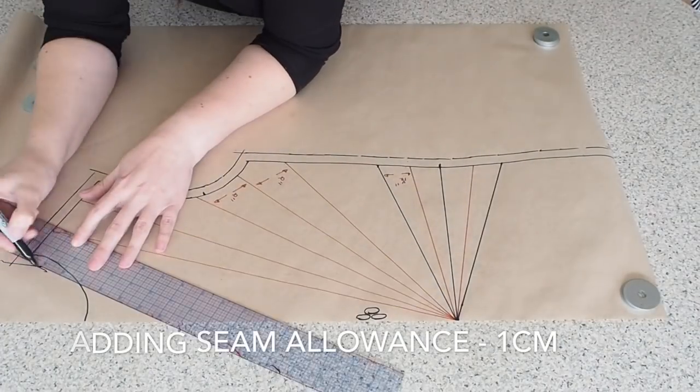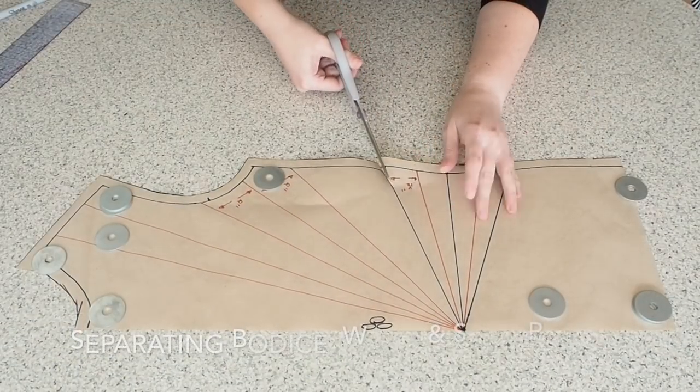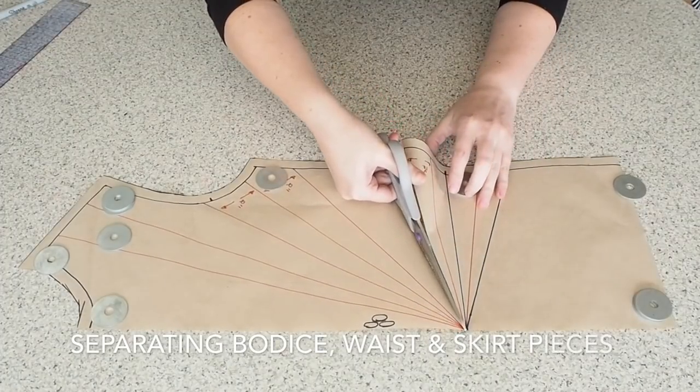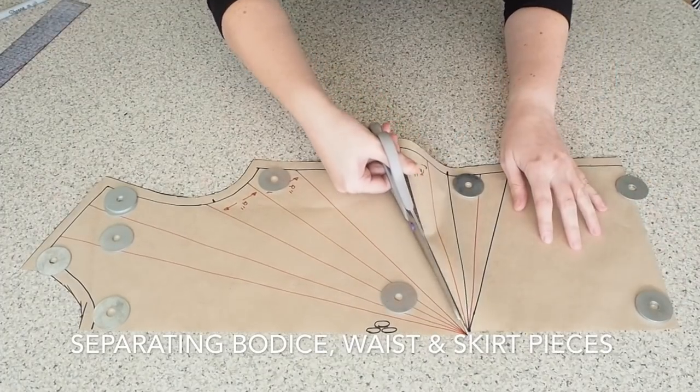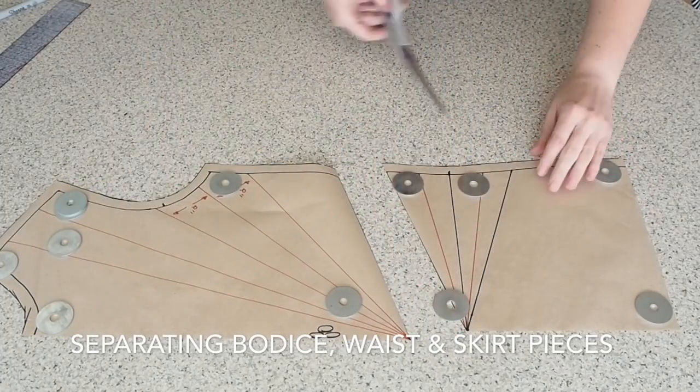So this one entire piece will become three pieces. So I'm separating that little triangle you see me draw and that, as I say, will be my waist piece. I'll have my bodice piece and then the top part of my skirt.